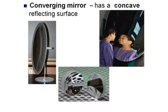We have converging mirrors. These ones have a concave reflecting surface. Think of this as the inside of the spoon where the cereal would sit when you eat it.